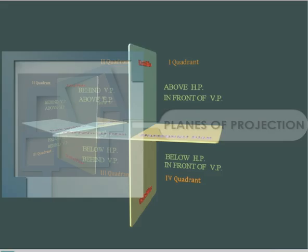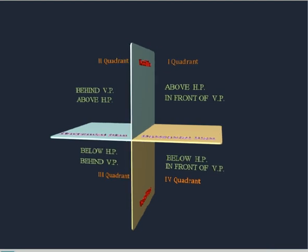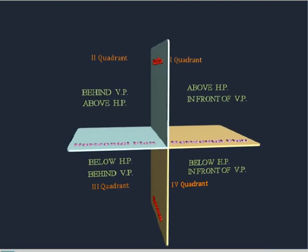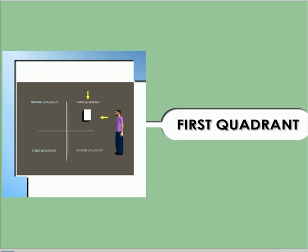Planes of projection. There are two planes of projection, namely the vertical plane and the horizontal plane. These two planes are at right angles to each other and form four quadrants, namely the first quadrant, second quadrant, third quadrant, and fourth quadrant. In this video, we will see about how an object is placed in the first quadrant.